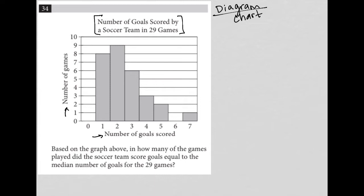So it looks like this is saying if you scored one goal, that happened in a total of eight games — eight out of the 29 games you scored one goal. And nine out of the 29 games you scored two goals. So I think I understand how this is formatted now.